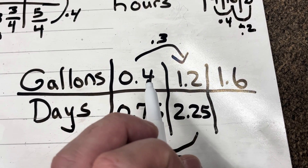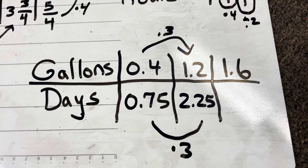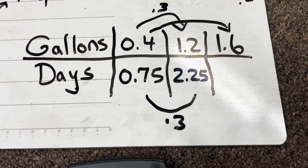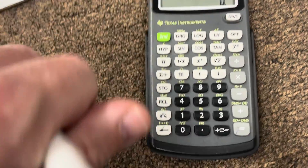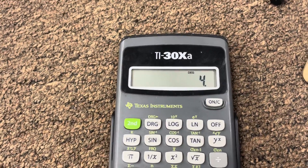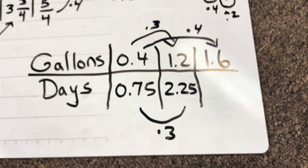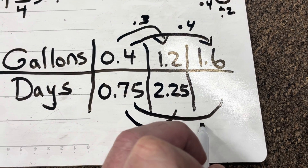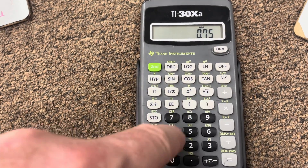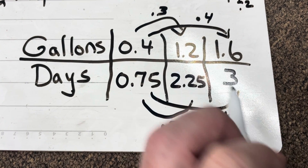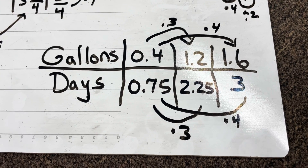For the last missing value, I stay consistent and use 0.4 as my reference. I type 1.6 divided by 0.4 into the calculator, which equals 4. So I multiplied by 4. That means I need 0.75 times 4. On the calculator: 0.75 times 4 equals 3. So in 3 days I used 1.6 gallons. That fills in the table — that's ratio tables for you.